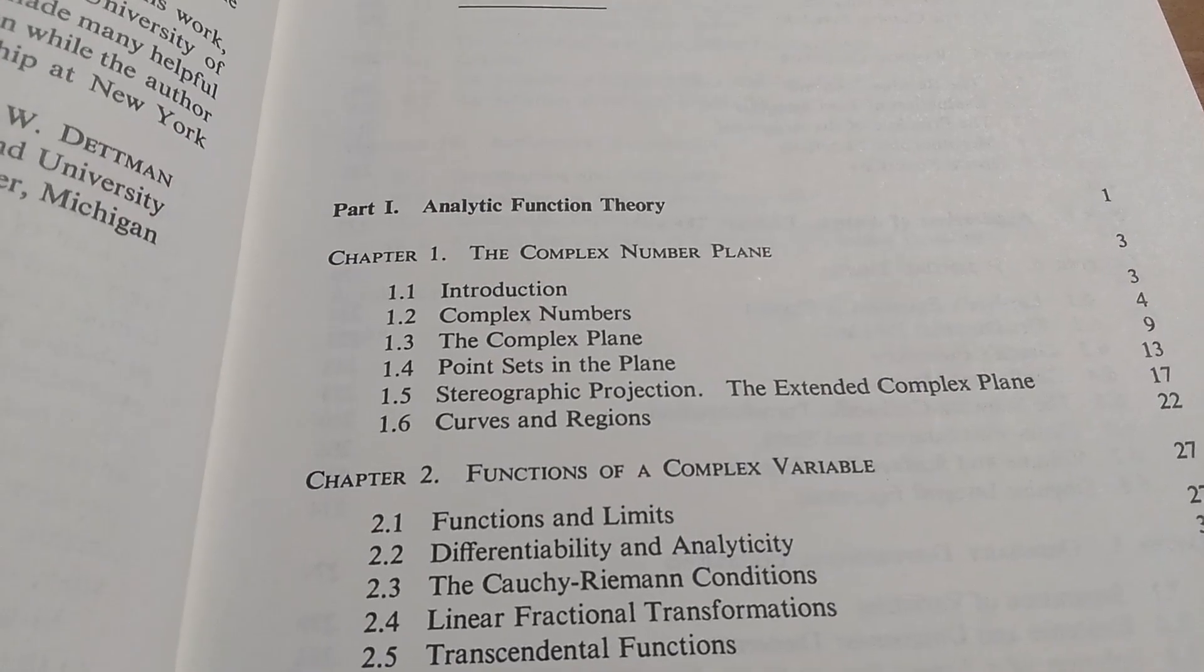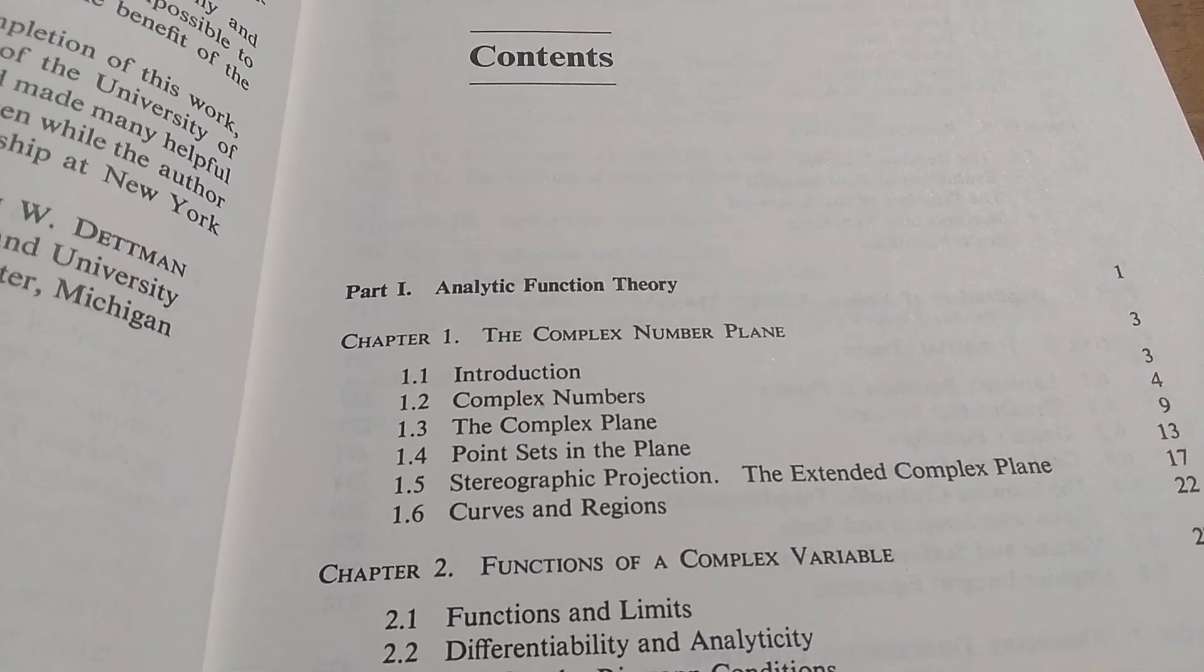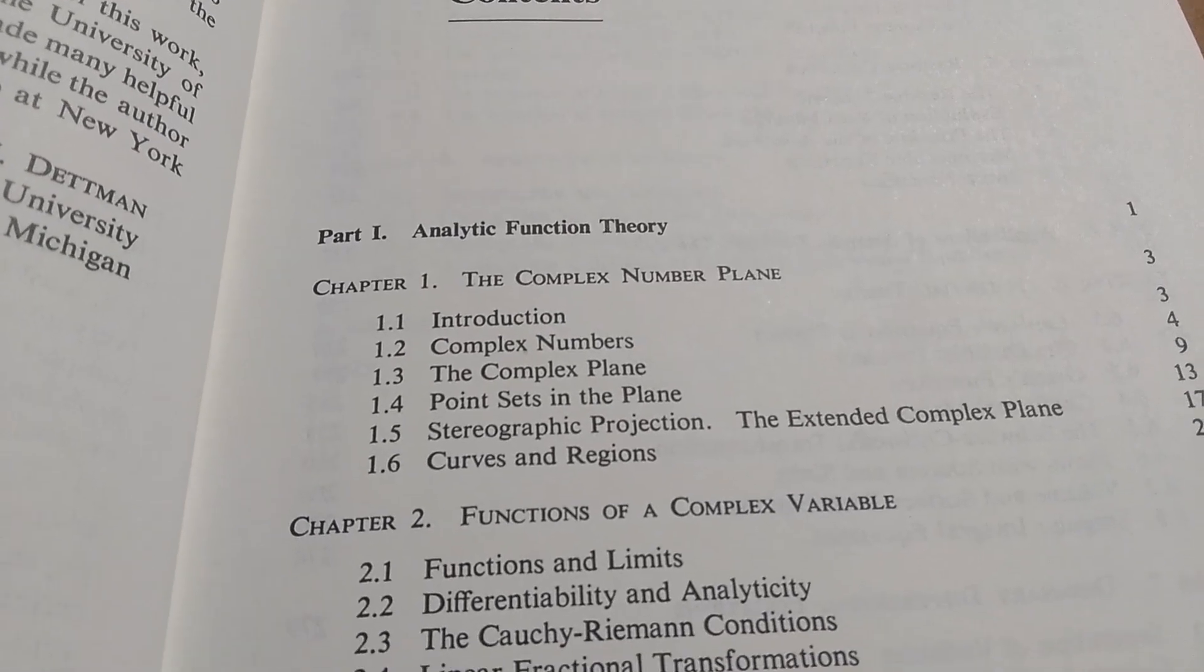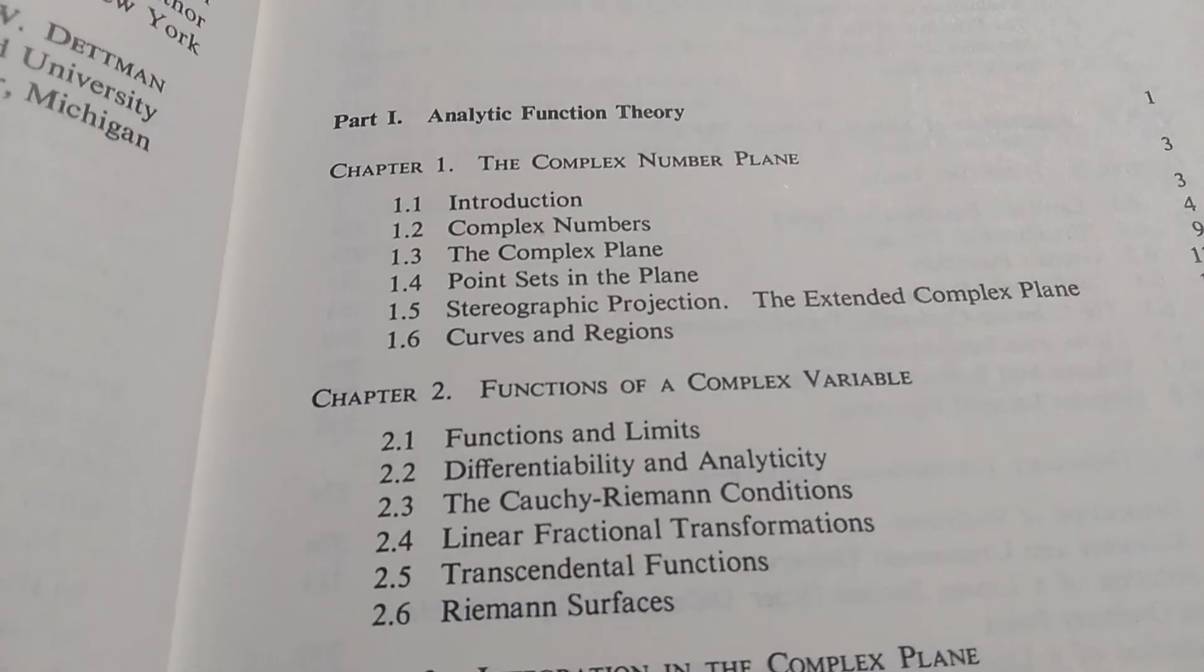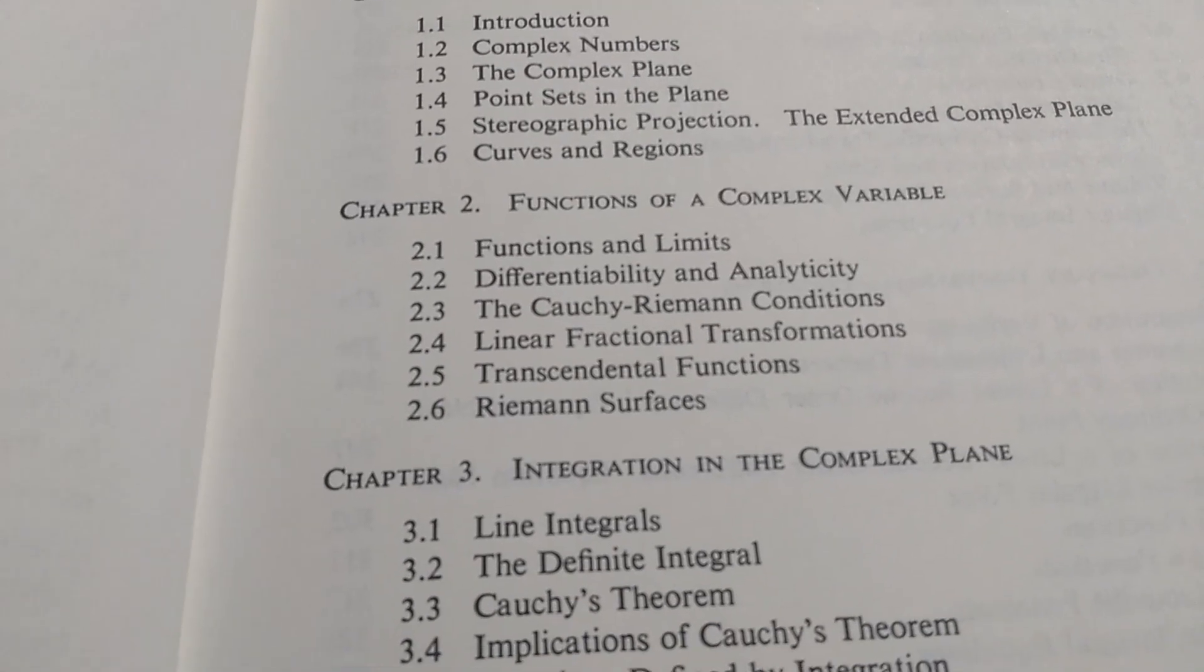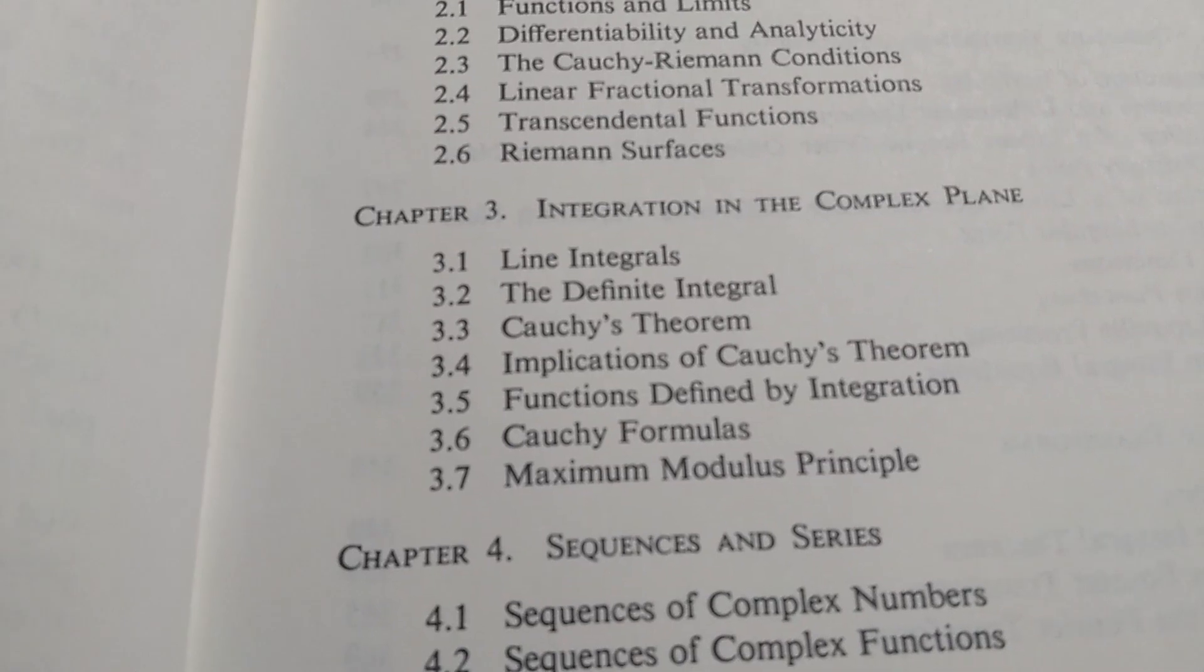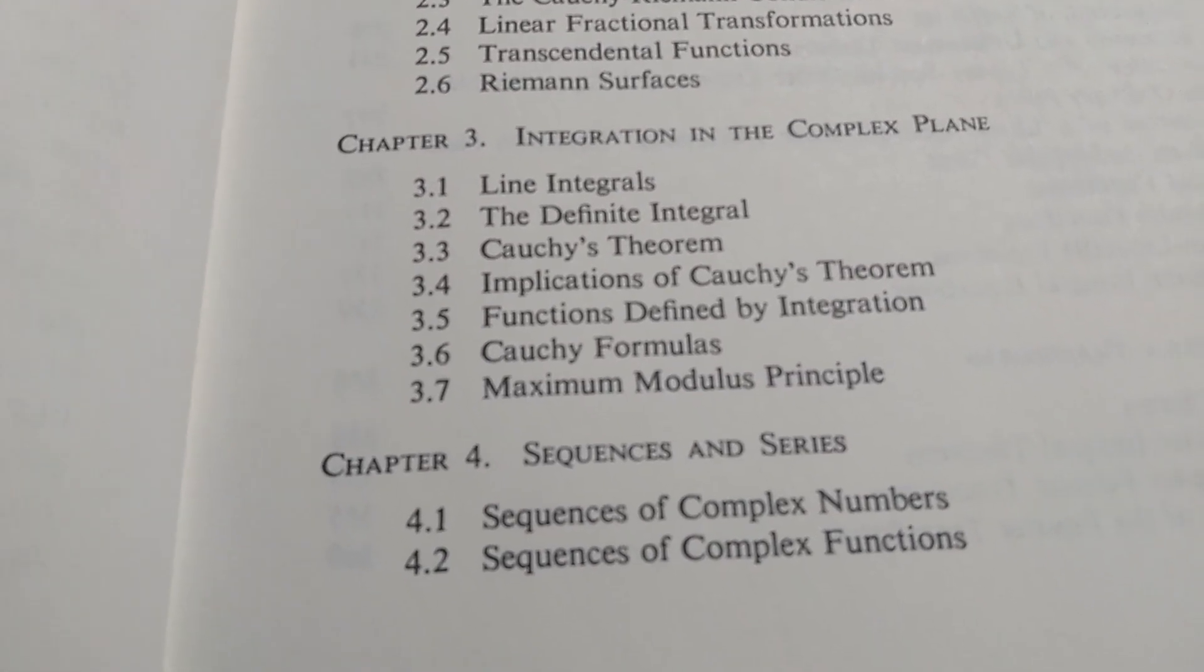The table of contents is pretty standard for a complex analysis book. It starts off with the complex number plane and then functions of a complex variable. It talks about Cauchy-Riemann, line integrals, Cauchy's theorem, the maximum modulus principle, all the stuff you would typically see.